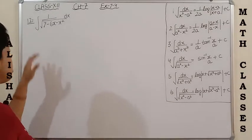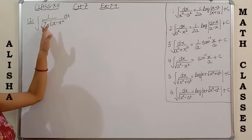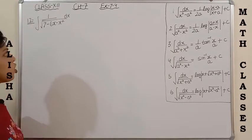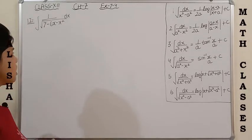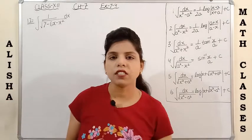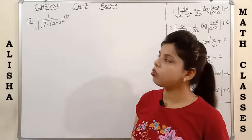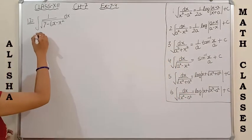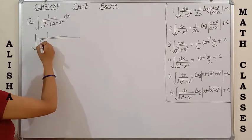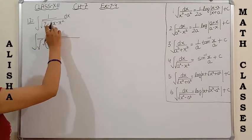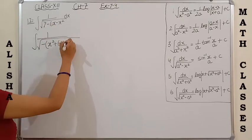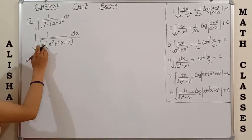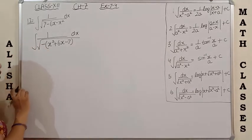Question 12: integrate 1/√(7 - 6x - x²). We have a quadratic equation in the denominator with a square root. The coefficient of x² is -1, so we take negative common. An important mistake to avoid: you cannot take the negative sign outside the square root, because √(-7) cannot be written as -√7 — it becomes a complex number.